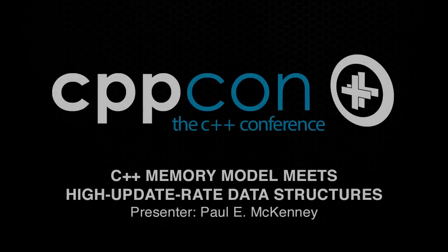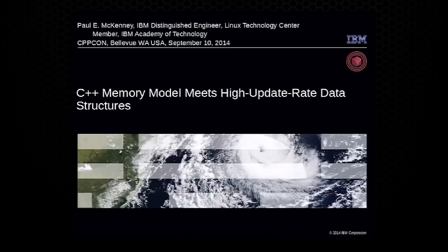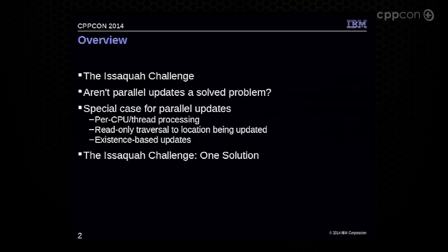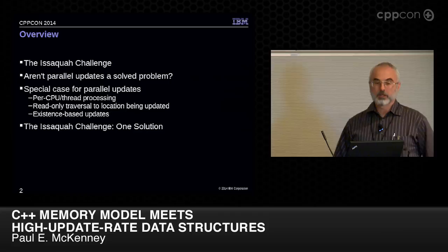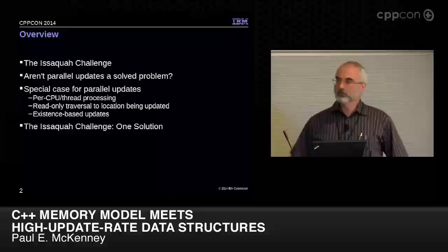OK, let's get started. People will keep coming in, and that's fine — we can deal with that. So we're talking here about memory model meeting high update rate data structures, which is a little bit of a dark area in concurrency. We'll be talking about the Issaquah challenge, parallel updates, special cases for making it work better, and then one solution to the challenge.